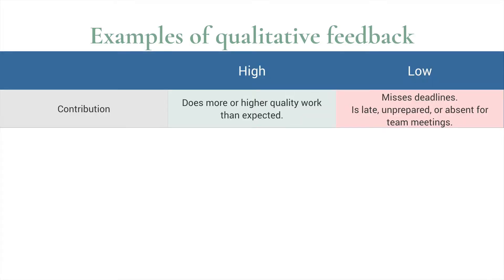For example, contribution: does the student do more or higher quality work than expected? A low rating — you might say: misses deadlines, is late, unprepared, or absent for team members.